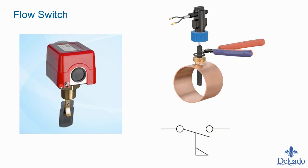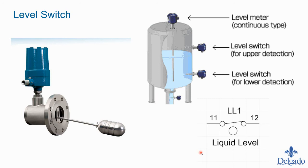A flow switch goes inside a pipe where flow will occur. It has a small plate inside; as fluid, air, or gas flows through the pipe, the plate gets pushed and a contact inside the body changes state. The symbol for a flow switch is a switch symbol with a small upside-down flag shape — like a golf flag — underneath it.